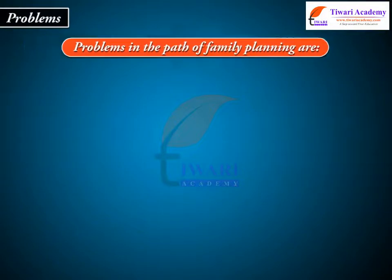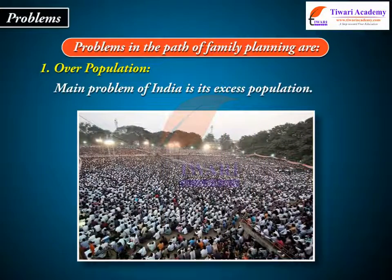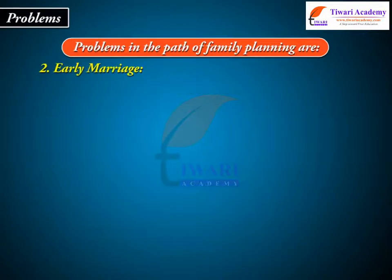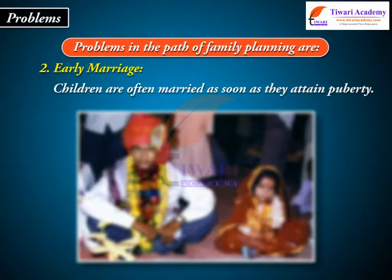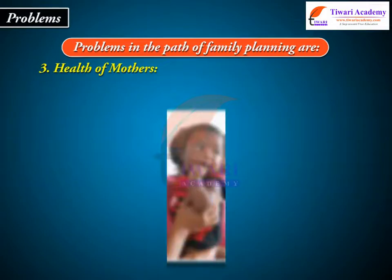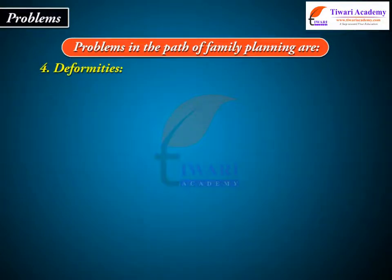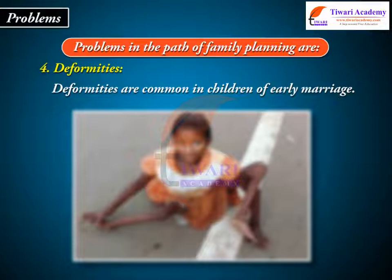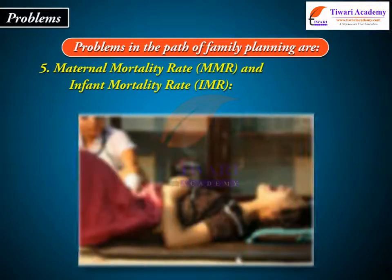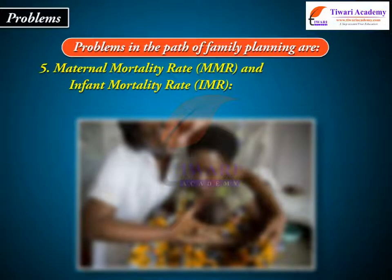Problems in the path of family planning: 1. Overpopulation — the main problem of India is its excess population. 2. Early marriage — children are often married as soon as they attain puberty. 3. Health of mothers — early marriage leads to several diseases in mothers. 4. Deformities — deformities are common in children of early marriage. 5. Maternal mortality rate (MMR) and infant mortality rate — these are high in early marriage.